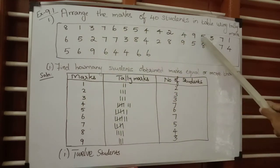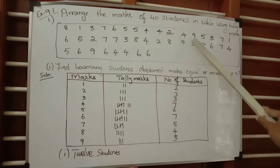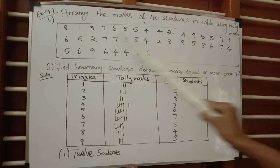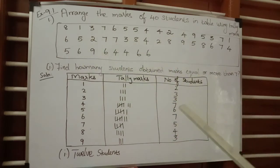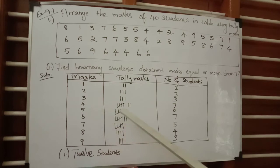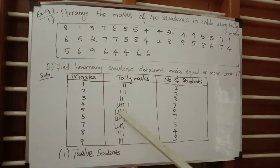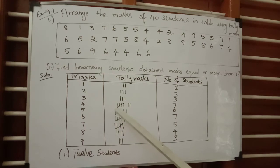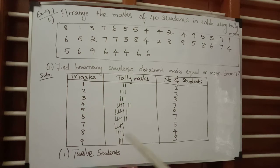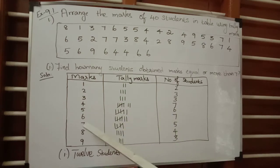For the number five, count: one, two, three, four, five, six — it has been repeated six times. Draw the tally marks: one, two, three, four, and the fifth line diagonally over the previous four lines, then the sixth line. The number of students for mark five is six.